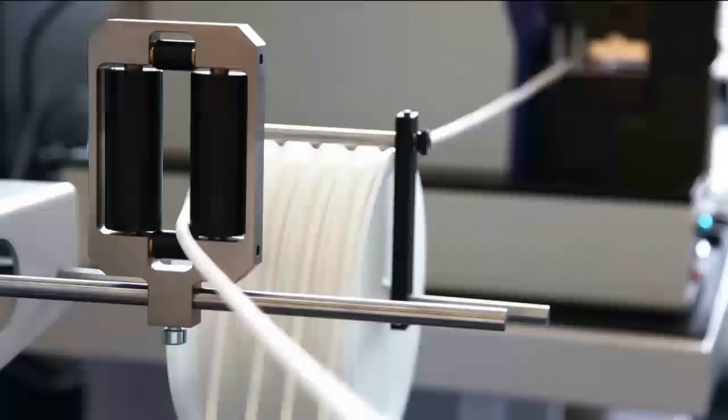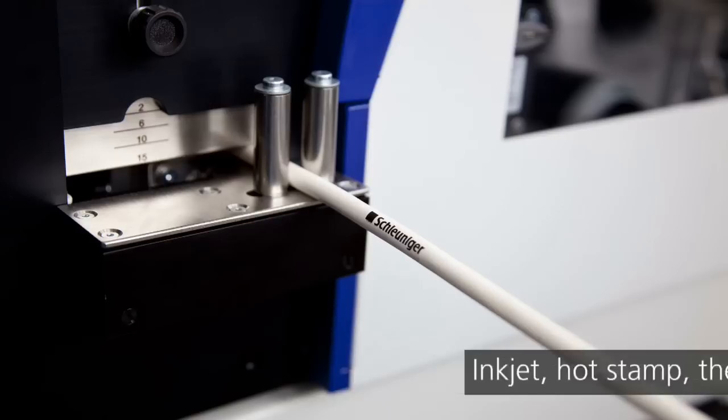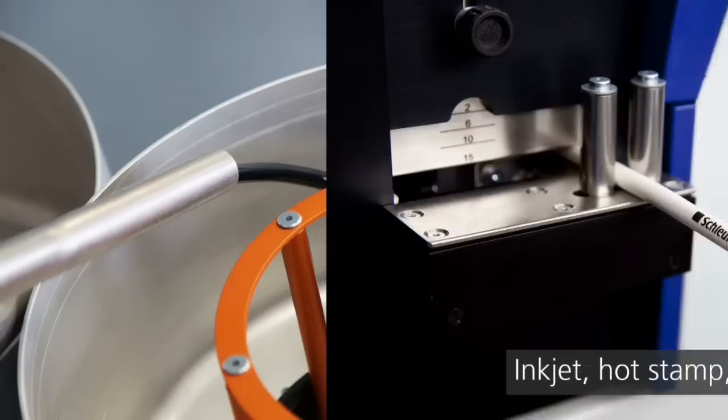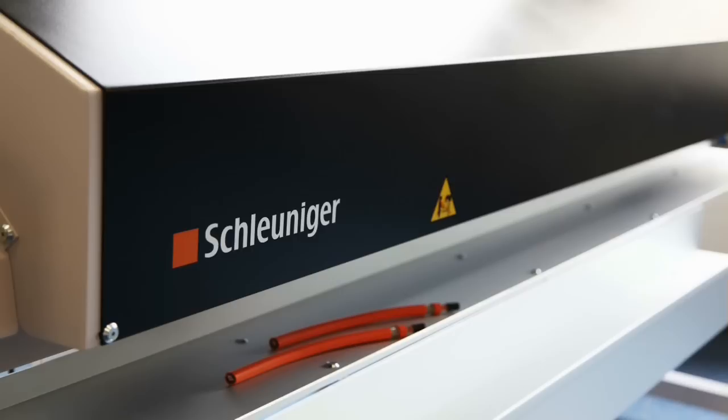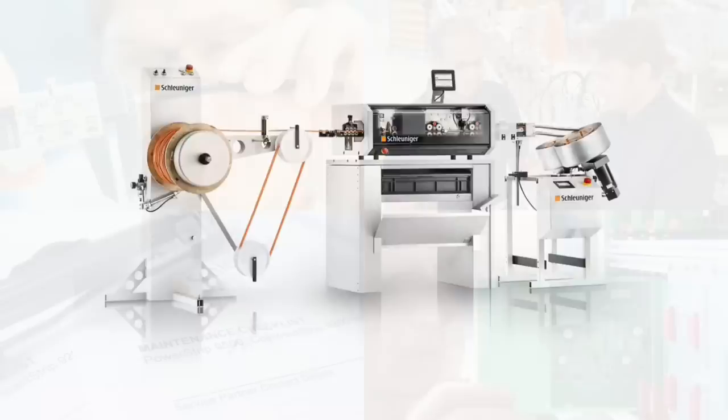Schleuniger offers a complete line of accessories to expand your capabilities and enhance your wire processing production. With this full range of integrated accessories, you can turn your machine into a fully automatic processing system.